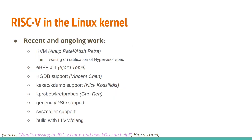Some of the recent and ongoing work for the RISC-V port of the Linux kernel: KVM is almost all done now by Anoop and Atish from Western Digital, just waiting on ratification of the hypervisor spec in the RISC-V ISA. There's the eBPF JIT, GDB support, kexec, kdump, kprobes, and kretprobes for Ftrace, which I've become a big fan of — very useful for troubleshooting without having to add print statements. There's also generic VDSO support, syscaller support for fuzzing, and being able to build with Clang instead of GCC.